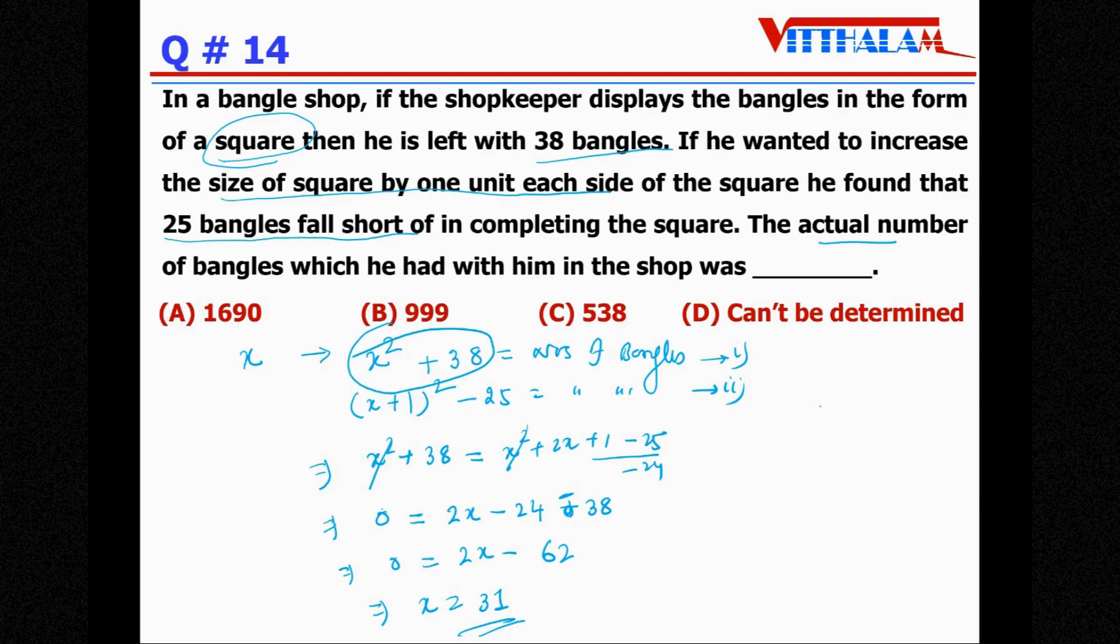So let's place the value of x in the equation. Number of bangles is x² + 38 = 31² + 38. 31 square: 31 ones are 31, 3 carry over, 3's are 93 plus 3, so it is 961. 961 plus 38, so it is 999. Option B.